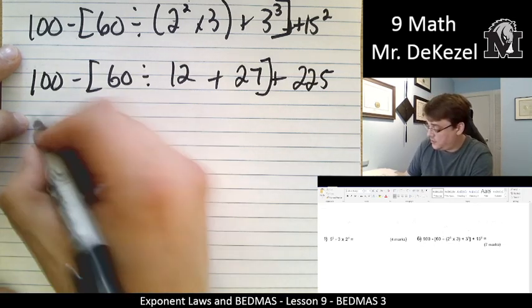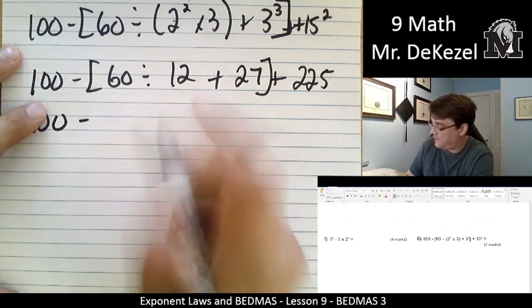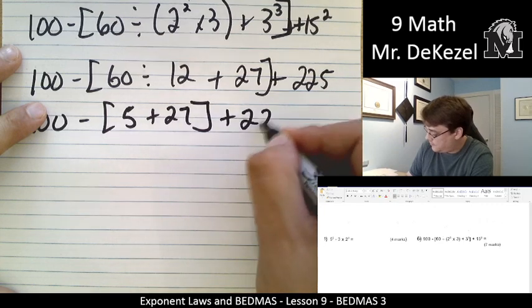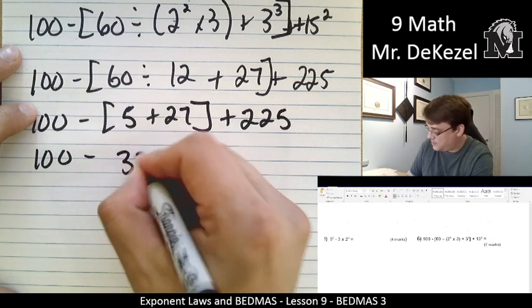Plus 15 squared, I know this one is 225. We're going to continue. 100 subtract, 60 divided by 12 is 5 plus 27. We're going to continue, finish off that bracket is 32.